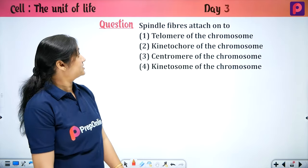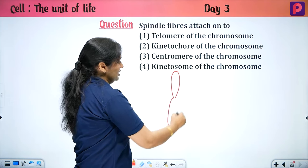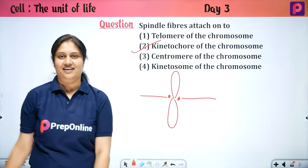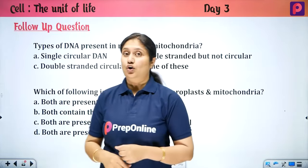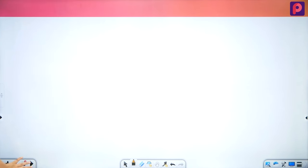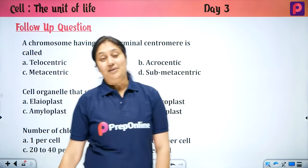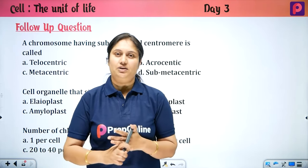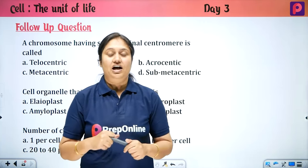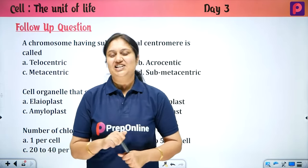Spindle fibers attach onto the kinetochore of chromosomes — so option 2 (kinetochore) is the correct answer. This was a follow-up question — please give your answer in the comments section. You can also do chapter-wise tests on our app. Thank you, bye!